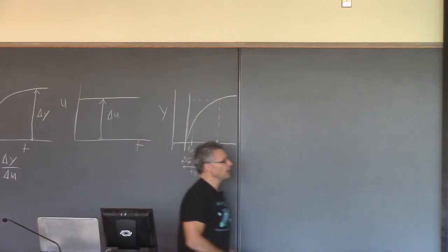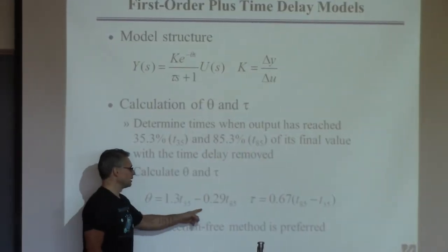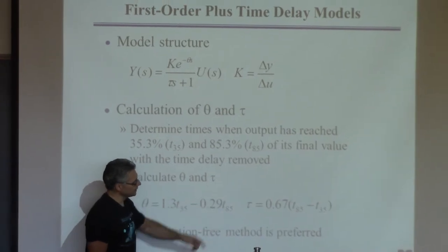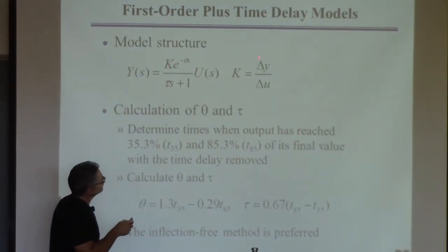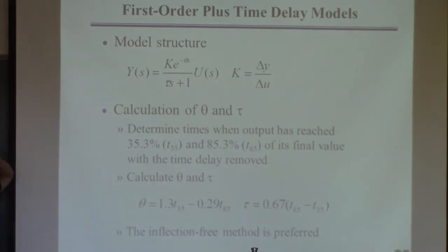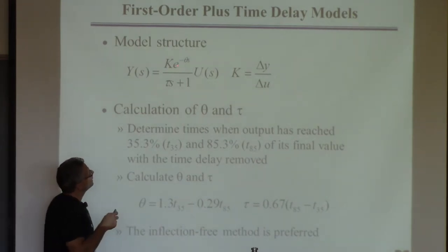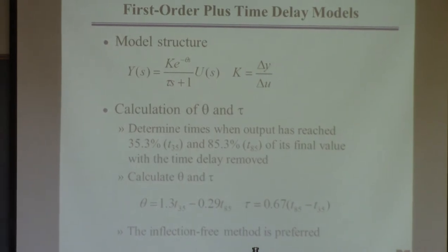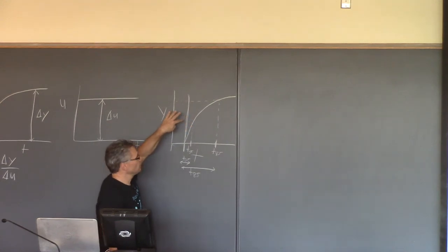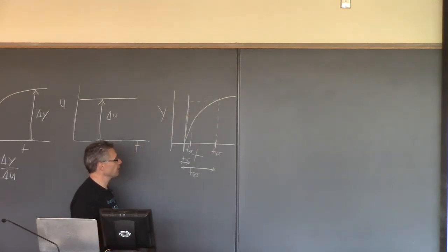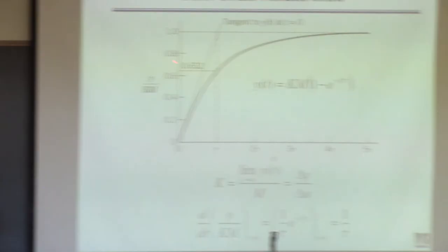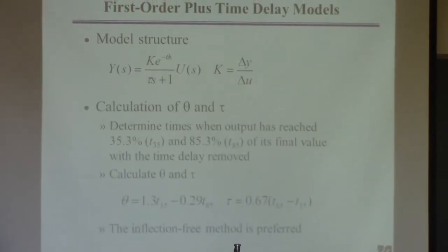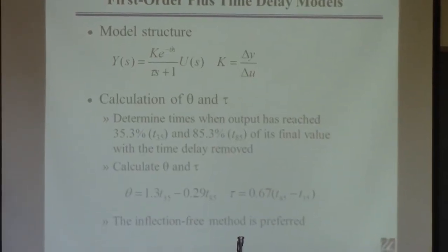Once you have T35 and T85, you can plug them into the equations to find theta and the time constant tau. You already know what the gain is—as usual, you find it from the output change. This provides a simple way to find the parameters of the model. You get the data, find points on the response curve at 35% and 85%, and find the parameters from those points. For a first-order system without a time delay, you only need one point at 63%; with a time delay, you need two points at 35% and 85%.